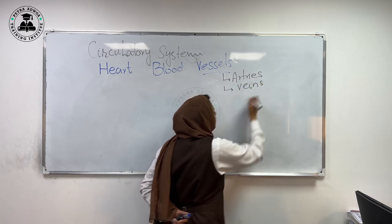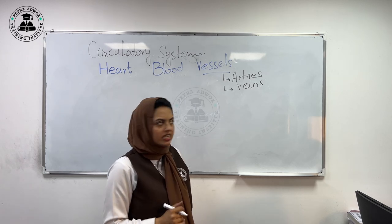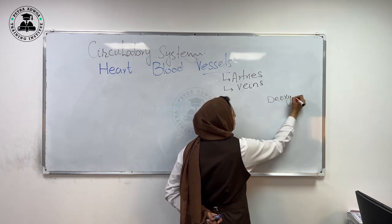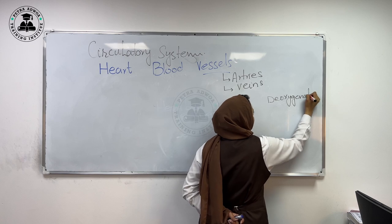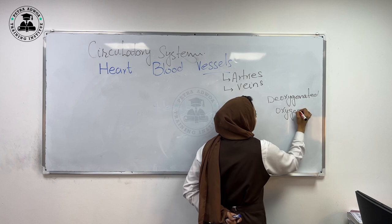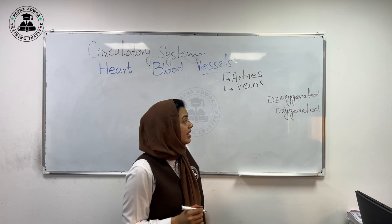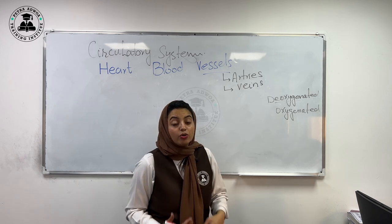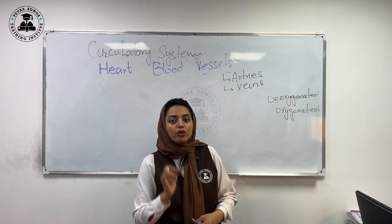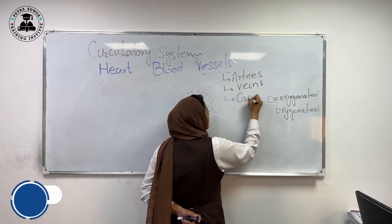The second vessel is veins. Veins carry deoxygenated blood. Deoxygenated blood is the blood which is not clean — it has a high amount of carbon dioxide. Oxygenated blood is the blood which has a low amount of carbon dioxide. The third vessel is capillaries.